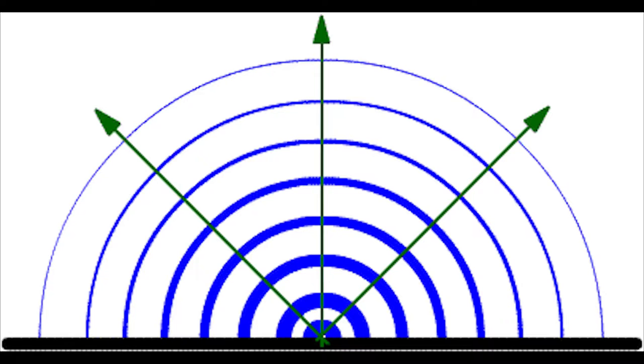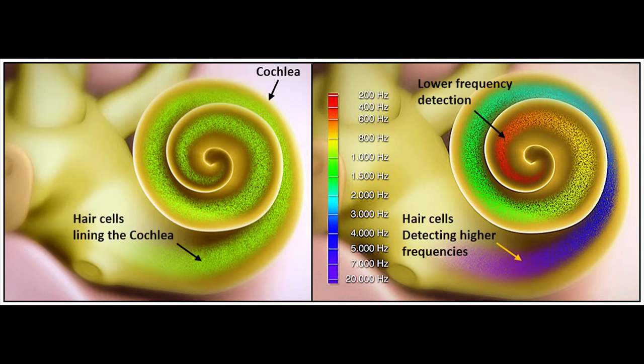So why does sound not continue forever? As the wave travels, it spreads out, making it harder and harder for the human ear to detect. Usually, when a vibration in the air reaches our ears, it causes tiny hairs within our ears to vibrate as well. These vibrations are transmitted to the brain and interpreted as sound. However, if a wave has spread out immensely, it will no longer be concentrated enough to cause significant vibration in our ears.